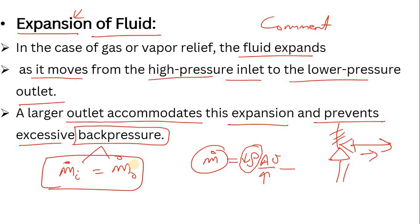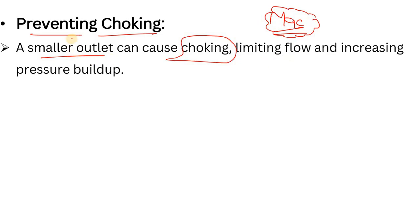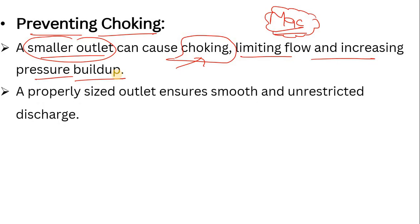The second most important reason is to prevent choking. If choking happens at the outlet when the PSV pops up, the fluid will not go to the destination and will come back. A smaller outlet can cause choking. That's why we calculate the Mach number in the case of gases or vapors. Can you let me know in the comments box: if the fluid is liquid, do we require the Mach number or not? A smaller outlet can choke the fluid, limit flow, and increase pressure build-up.